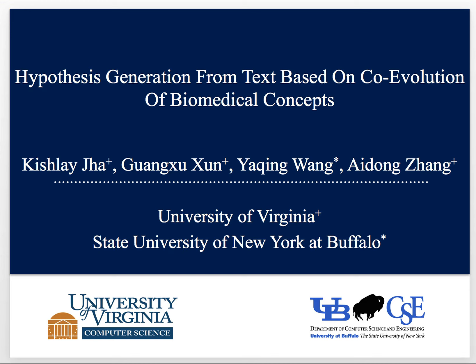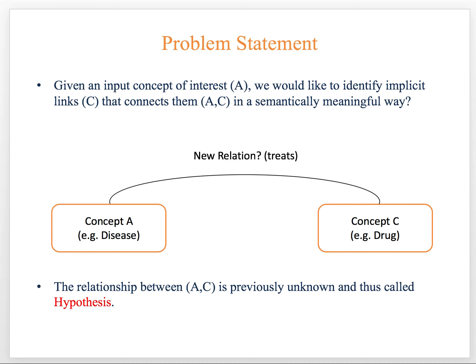Let's get right into the problem statement. Given an input concept of interest, A, we would like to identify implicit links, C, that connects A and C in a semantically meaningful way. For instance, if the input concept A is a disease, the implicit link C could be a drug that treats this particular disease. Now, as the link between A and C is not known before, it's called a hypothesis.